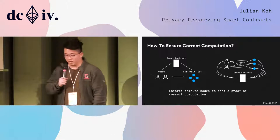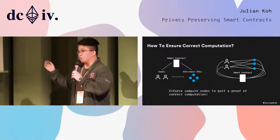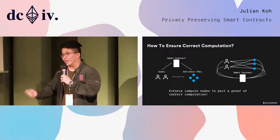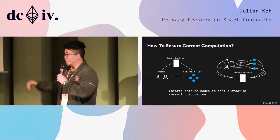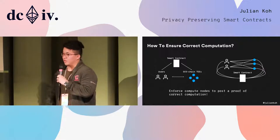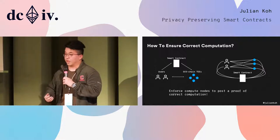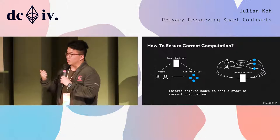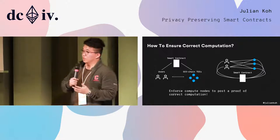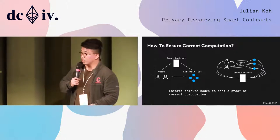One big problem with MPC is: what if one participant doesn't follow the correct protocol and just does some random computation, making the result nonsense? They would have wasted everyone else's time — that's a kind of Sybil attack. So we also want to make sure that all these private computing nodes do the right thing, by forcing them to prove that they ran the correct computation.